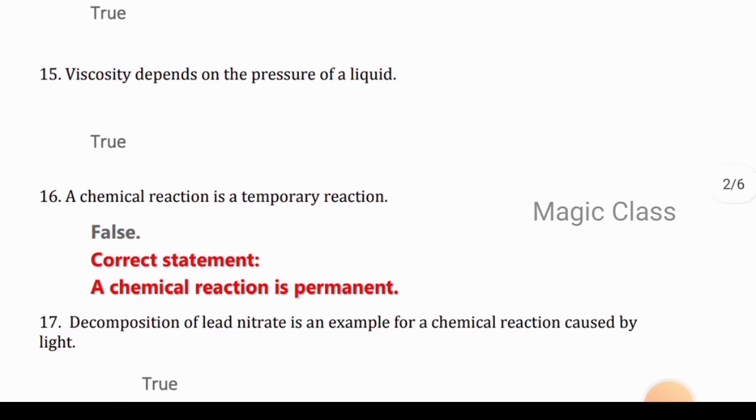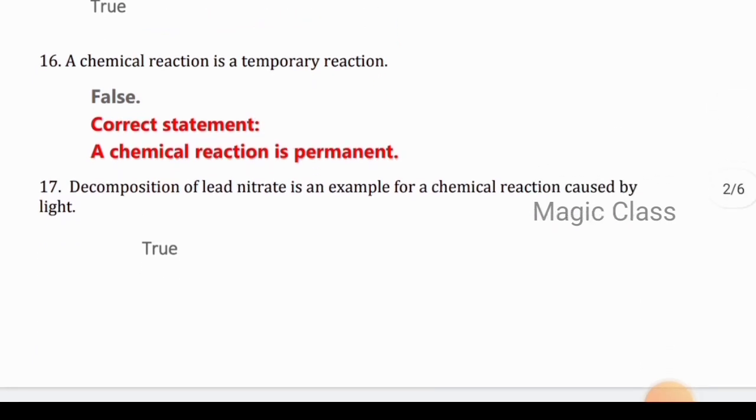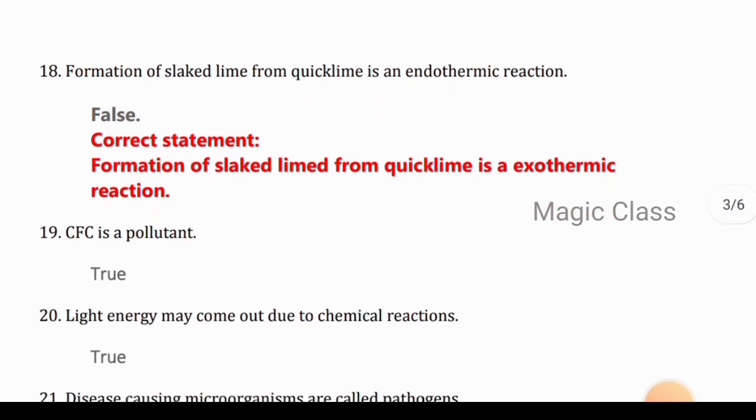Question 16: A chemical reaction is a temporary reaction. False, because a chemical reaction is permanent. Question 17: Decomposition of lead nitrate is an example for a chemical reaction caused by light. True. Question 18: Formation of slaked lime from quicklime is an endothermic reaction. False, because the formation of slaked lime from quicklime is an exothermic reaction.